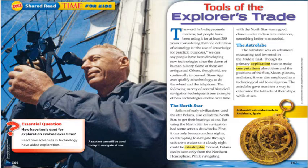The astrolabe was an advanced measuring tool invented in the Middle East. Though its primary application was to make computations about time and the positions of the sun, moon, planets, and stars, it was also employed as a technological aid to navigation. The astrolabe gave mariners a way to determine the latitude of their ships while at sea. Here in the picture is a Moorish astrolabe made in Andalusia, Spain — this is what navigators used in old times.